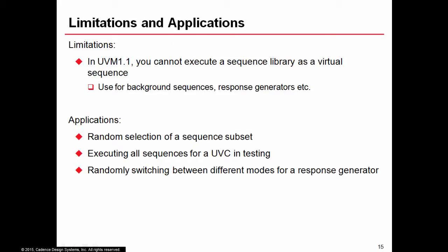A current limitation: up to UVM 1.1, a sequence library cannot be executed as part of a virtual sequence, so you cannot synchronize a UVC executing a sequence library with other UVCs inside a virtual sequence. Despite this, sequence libraries are still useful for unsynchronized UVCs — for random selection of sequences from a subset, executing all sequences in a random order for testing, or randomly switching between different modes such as different sequences for a response generator.